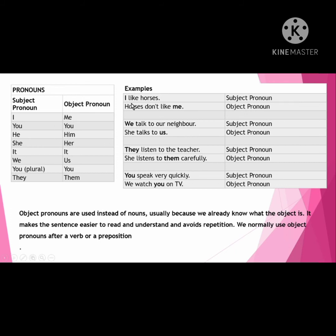Examples. I like horses — here 'I' is a subject pronoun. Horses don't like me — 'me' is an object pronoun. We talk to our neighbor — 'we' is a subject pronoun. She talks to us — 'us' is an object pronoun. They listen to the teacher — 'they' is a subject pronoun. She listens to them carefully — 'them' is an object pronoun.